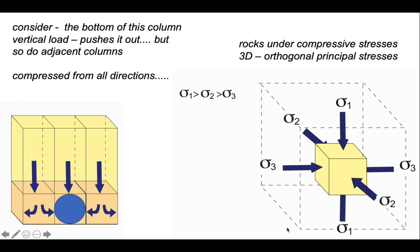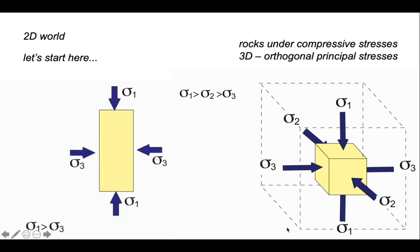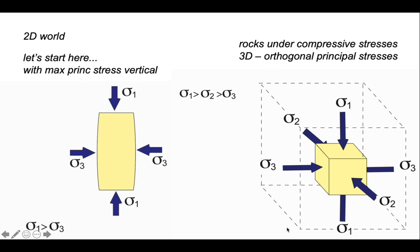The maximum compressive stress we give the notation sigma 1, the minimum compressive stress sigma 3, and an intermediate stress axis sigma 2 to create our three-dimensional pattern. Let's keep this simple in a 2D world, so we'll neglect sigma 2 for now and just consider sigma 1 and sigma 3. In this particular situation, sigma 1, the maximum compressive stress, is vertical and it's trying to push the rocks out against sigma 3. It's the difference between sigma 1 and sigma 3 that will permit deformation.